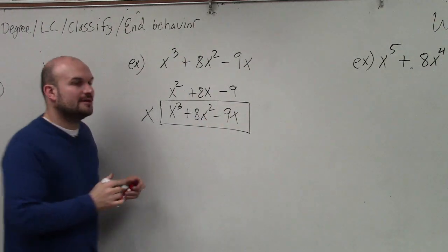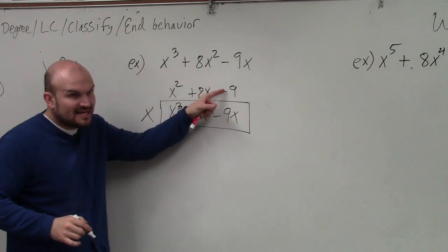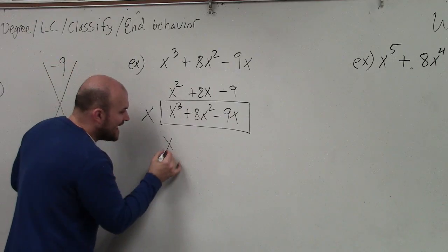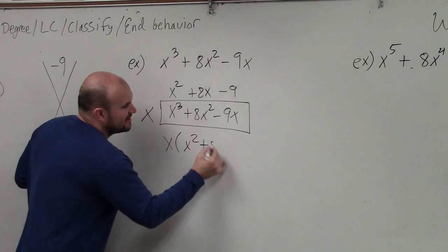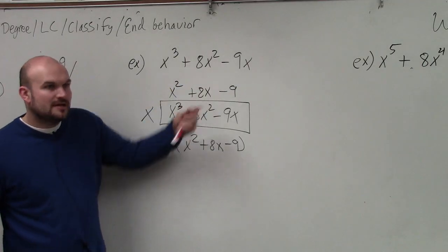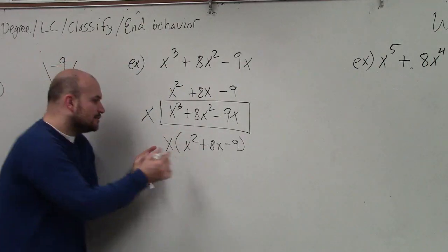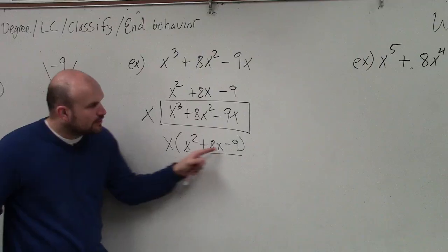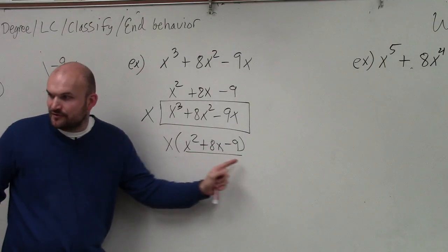So now, ladies and gentlemen, this times this gives us that, correct? So that times x squared plus 8x gives us our original problem. So by factoring out the x, look what I now have. Do I have a quadratic that is easy for us to factor?